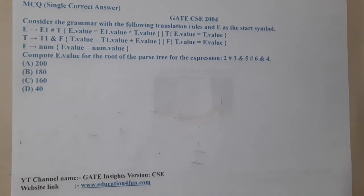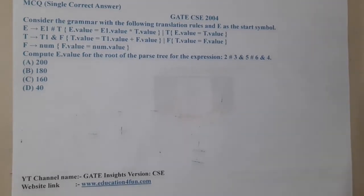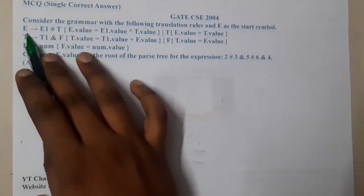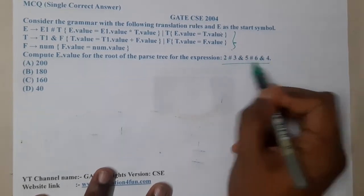Hello guys, we are back with our next lecture. In this lecture, let us go through the next question. This question belongs to GATE CSE 2004. The given question considers a grammar with the following translation rules, and they are asking what will be the parse tree result for this particular expression.